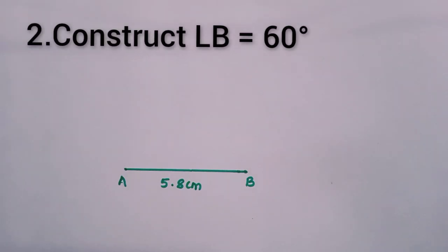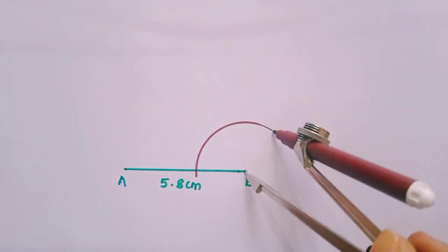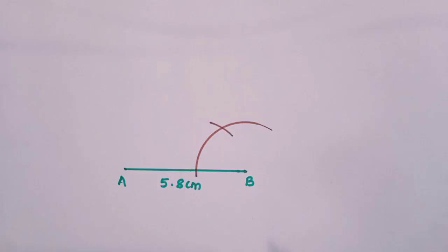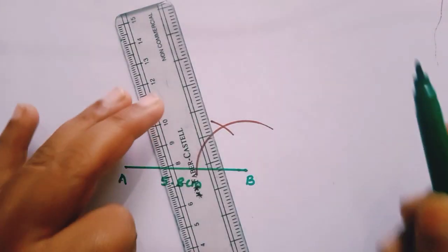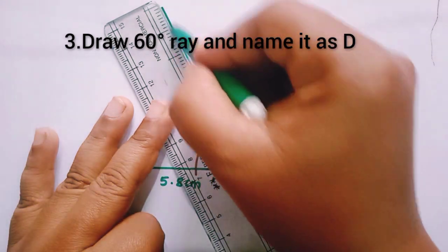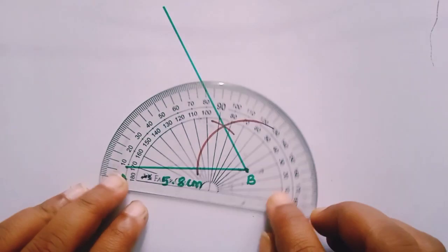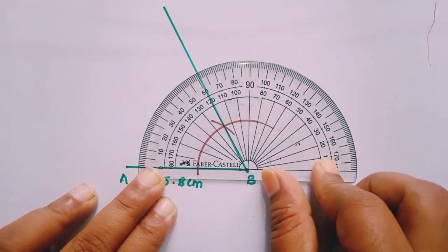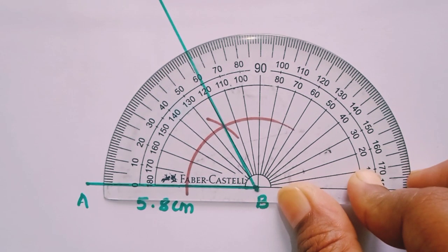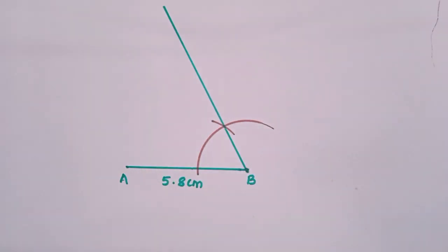Step two: draw an angle of 60 degrees at B. Take your compass and draw an arc of any radius, then draw the 60-degree arc. Take out your scale and draw the 60-degree ray. You can check whether it is 60 degrees using a protractor — you can see it is exactly 60 degrees. Name it.